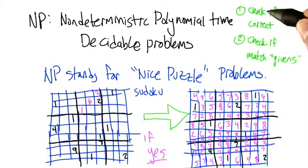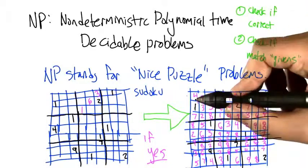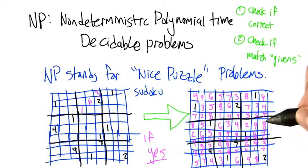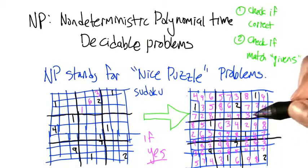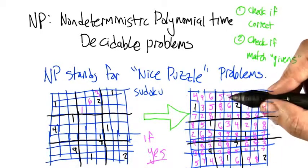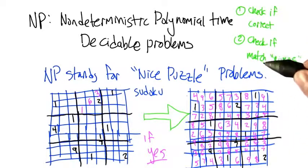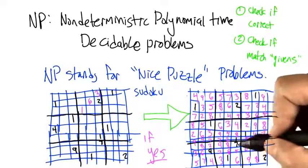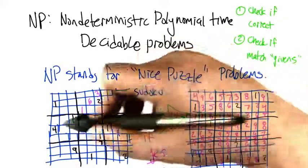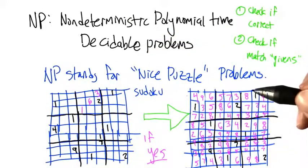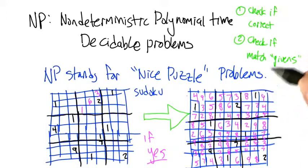Check to see if it's correct, if all the rows and columns have the numbers 1 through 9. That's a polynomial time decision problem that you can write really easily. And also check if the cells that you're given match what was given in the original puzzle, and that also is a very fast thing to be able to check.